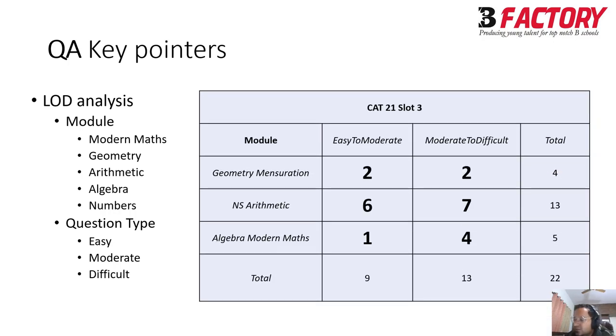So I just took a paper cat 21 slot 3. According to me, when I tried to analyze it, there were more questions on the NS arithmetic front. And more than almost half of them were doable. Geometry, mensuration, again, half were pretty doable. Algebra and modern math slightly on the tricky side in this slot. But if you see in totality, there are some questions in every module that you can attempt, even if you are not very great in that module. So nine questions, everyone can solve. Who has done, let's say at B factory, if I say, if you have done the class sheets. And if you have done properly the last two, three years trending papers, you might be able to do even half, maybe a half of the questions in the moderate to difficult domain, depending on which of these modules you like more. So that is how the game works.